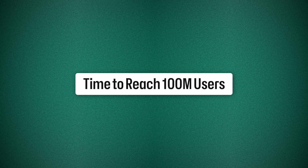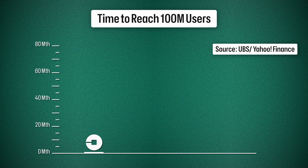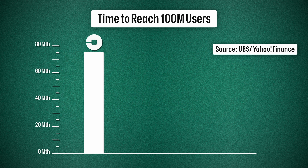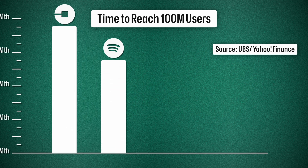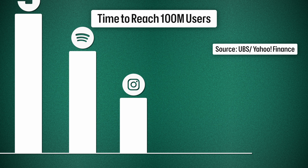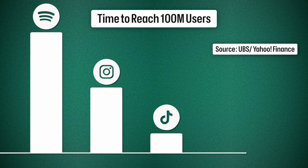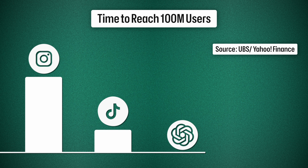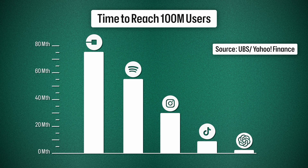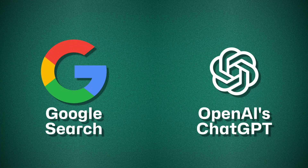Let's talk about popular products and how long they took to reach 100 million people. For Uber it was 70 months, Spotify was 55 months, Instagram took 30 months, TikTok only took 9 months. But ChatGPT did that in just 2 months — 100 million users in just 2 months. Apart from OpenAI's ChatGPT, there is no other company in the world doing it right now. That's why this is considered to be one of the biggest competitors of Google Search, because all the queries made on Google earlier are now shifting to ChatGPT, and it's going to be super powerful.